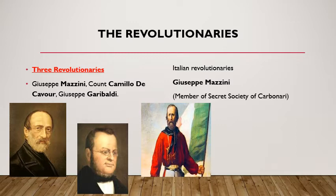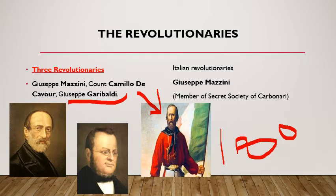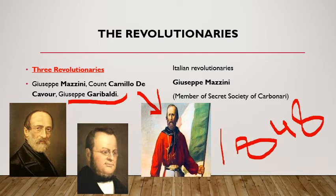Joseph Garibaldi was an Italian born on 4th July 1807. He was a general, patriot, and republican who contributed to the Italian unification and the creation of the Kingdom of Italy. In 1848, Garibaldi returned to Italy and commanded and fought in military campaigns that eventually led to the Italian unification.